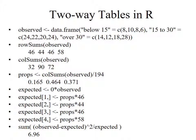If we put this into R and type 'observed', we'll see the table laid out. There's a wonderful command called 'rowSums' — capitalize the S in the middle — and 'rowSums(observed)' computes the row sums: 46 freshmen, 44 sophomores, 46 juniors, 58 seniors. 'colSums' — again, S capitalized — gives the column sums: 32, 90, and 72. Now I compute the proportions in each of the three categories: colSums divided by 194, giving 0.165, 0.464, and 0.371.